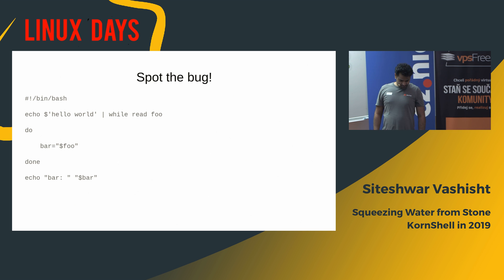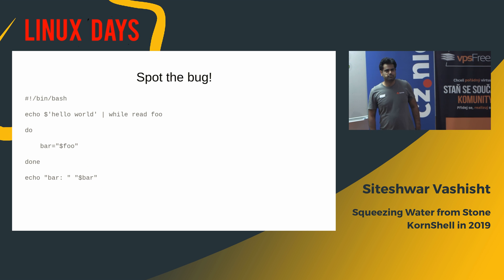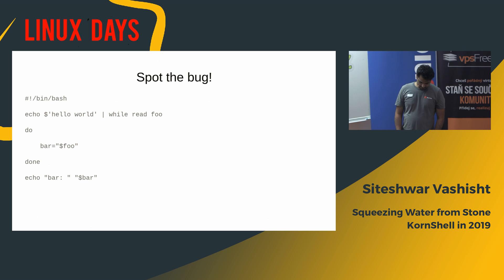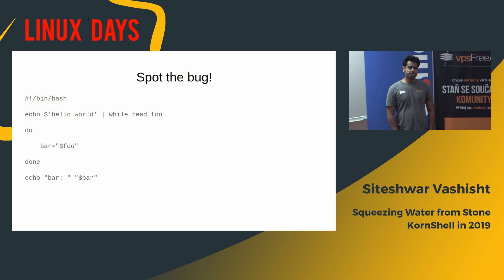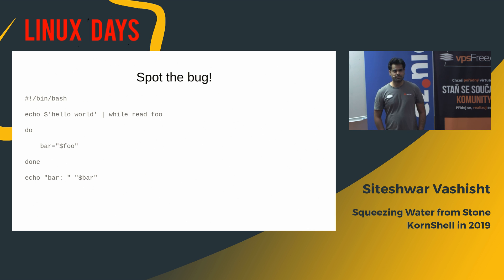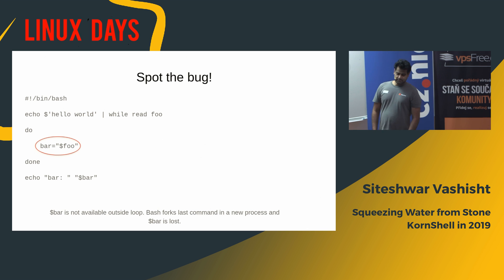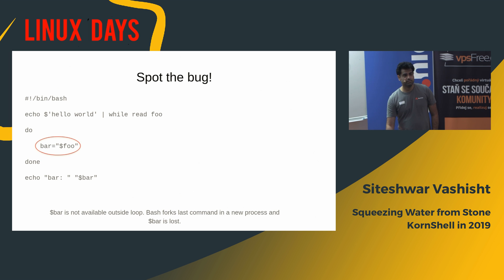Let's have another quiz. It's a very simple Bash script, and there's a bug in the script — the bug is specific to Bash. The bug lies here. Bash is going to fork the while loop in a separate process, and the value of bar will be lost. If you run the exact same script under KSH, it will work as expected.